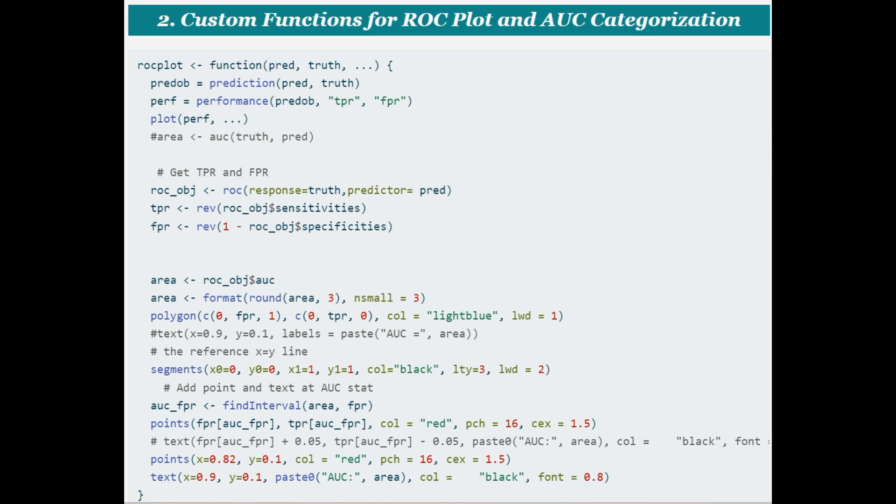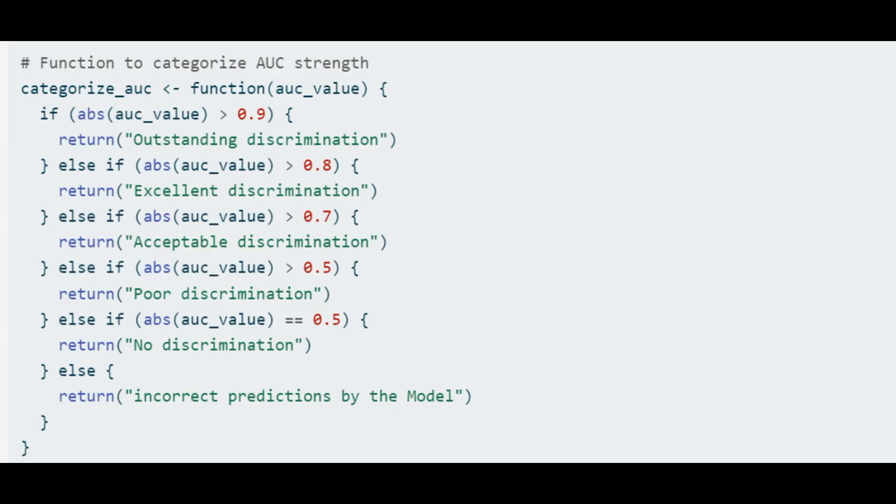Here is the custom functions for ROC plot and AUC categorization. You need to supply only the predicted values as pred, an actual value of dependent variable from test data as truth to the function, and you get a beautiful AUC-ROC colored plot. Next is the custom function for categorization of AUC score.